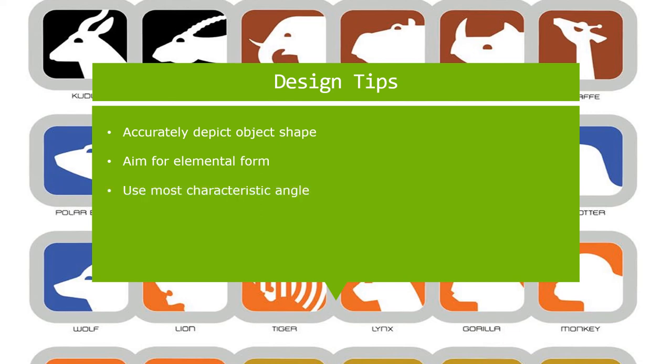Design tip three: use the most characteristic angle. Represent your image from its most characteristic angle. Since we are working within an existing sign set, you have to think about it in context of the larger system. Use the most characteristic angle within the context of what we are doing and think about what that means versus what everything else already looks like.